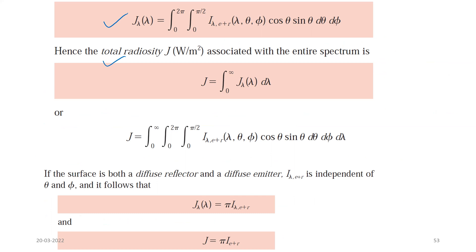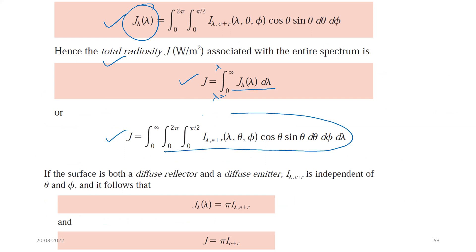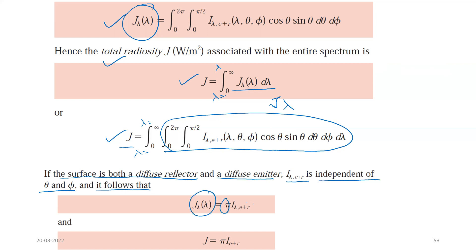The total radiosity J can be calculated by integrating J_lambda over lambda from 0 to infinity. If we consider the surface as both a diffuse reflector and a diffuse emitter, then i_lambda,e+r is independent of theta and phi, and we can say J_lambda equals π times i_lambda,e+r, and J equals π times i_e+r. These results have been taken directly from the earlier discussion of emission and irradiation.